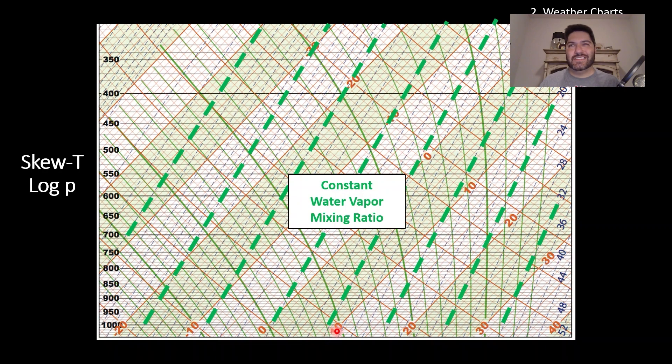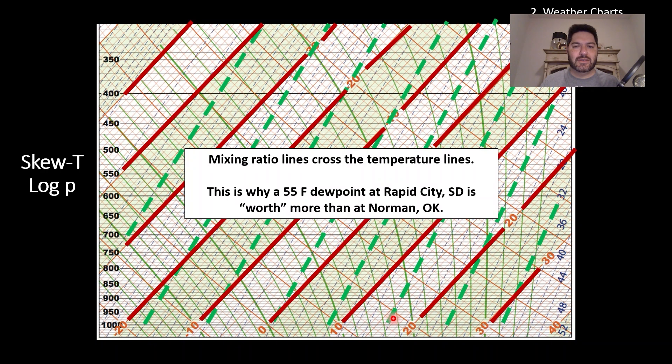And then the constant water vapor mixing ratio. This is basically a way to think about this as essentially dewpoint temperature. These are slanted almost in the same direction as the temperature lines. There's a little bit of difference, and I'll explain here in a second what that actually corresponds to and why that's important. But generally speaking, these correspond to surface dewpoint temperatures. Let me get right into the mixing ratio lines crossing the temperature lines. You can notice how the red lines here, which are the temperature lines, they slant slightly differently than the water vapor mixing ratio lines. This is how much liquid water there is per unit of dry air. And you can see that this is why a 55 dewpoint at Rapid City, South Dakota is actually worth more than at Norman.